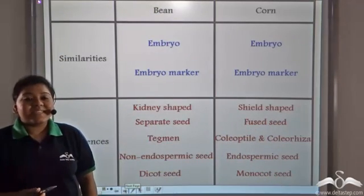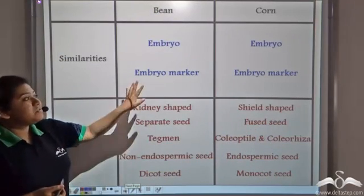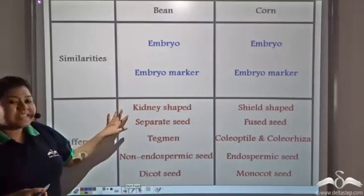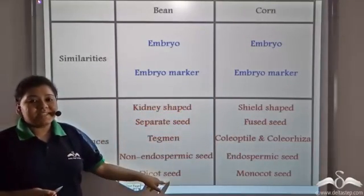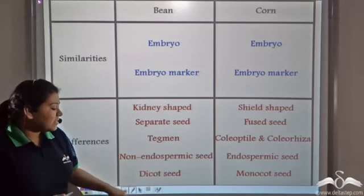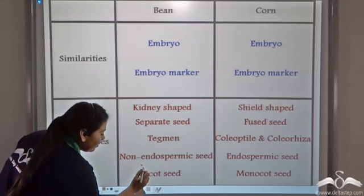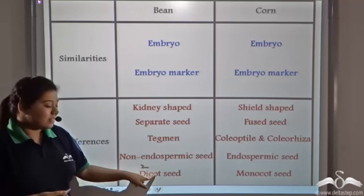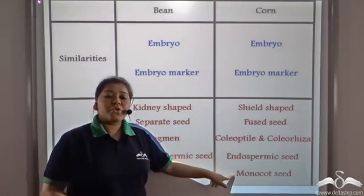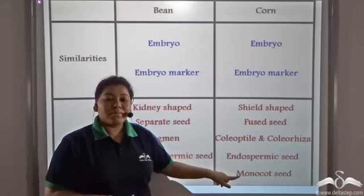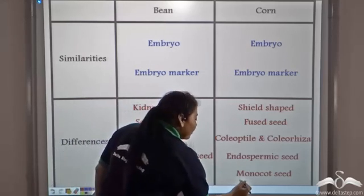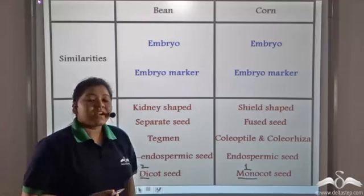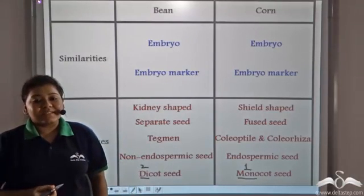So this is the next difference between beans and corns: bean is a dicot seed. 'Di' means two and 'cot' comes from the word cotyledon. Corn is a monocot seed. 'Mono' means one and 'cot' comes from the word cotyledon.